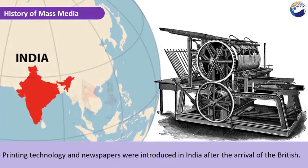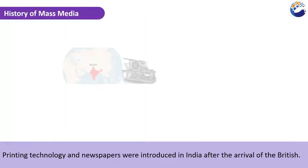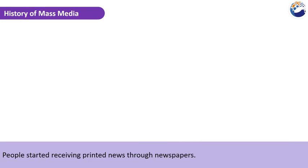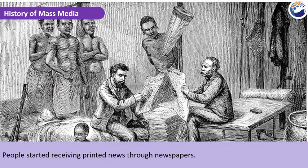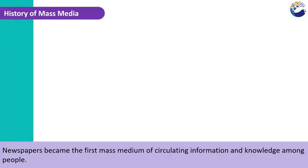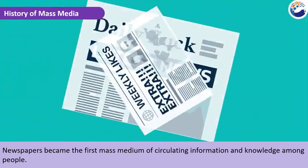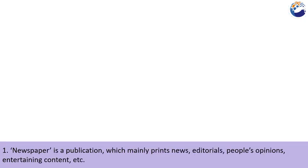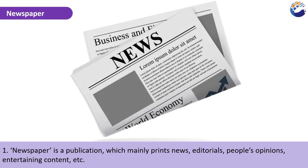History of Mass Media. Printing technology and newspapers were introduced in India after the arrival of the British. People started receiving printed news through newspapers. Newspapers became the first mass medium of circulating information and knowledge among people. A newspaper is a publication which mainly prints news, editorials, people's opinions, entertaining content, etc.